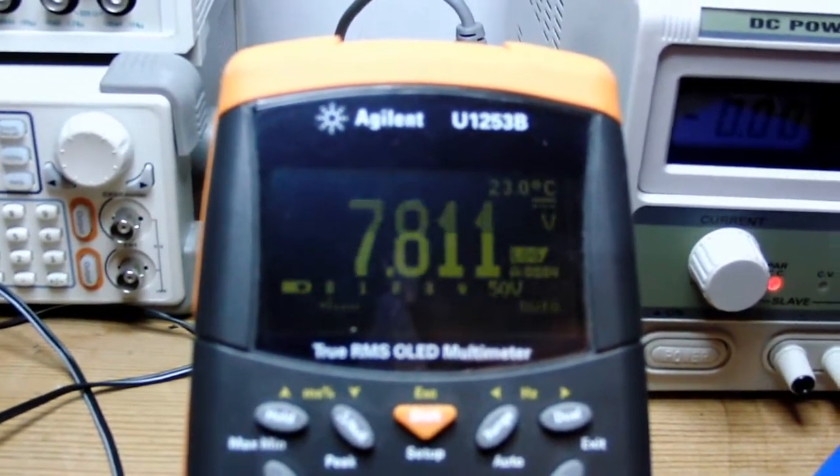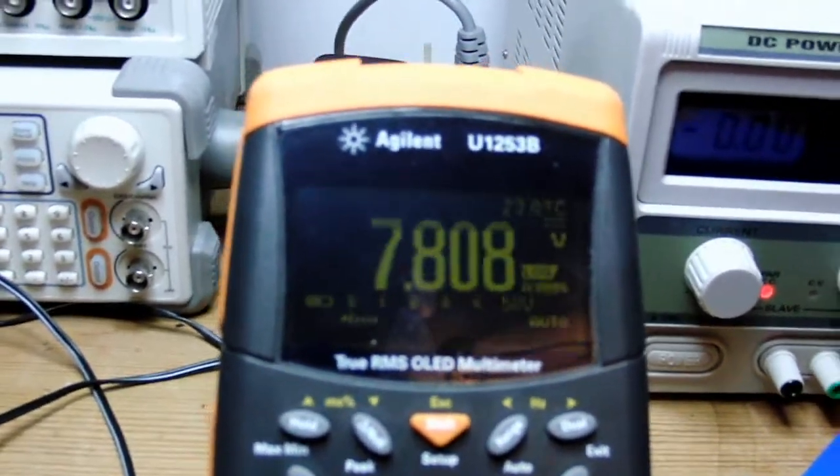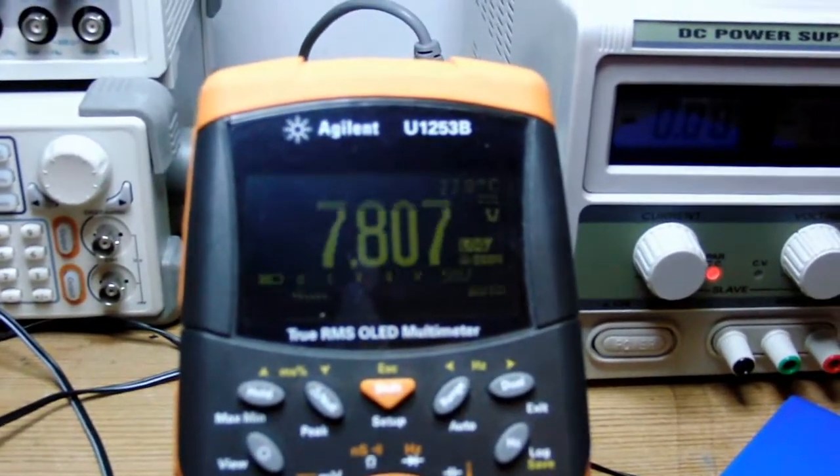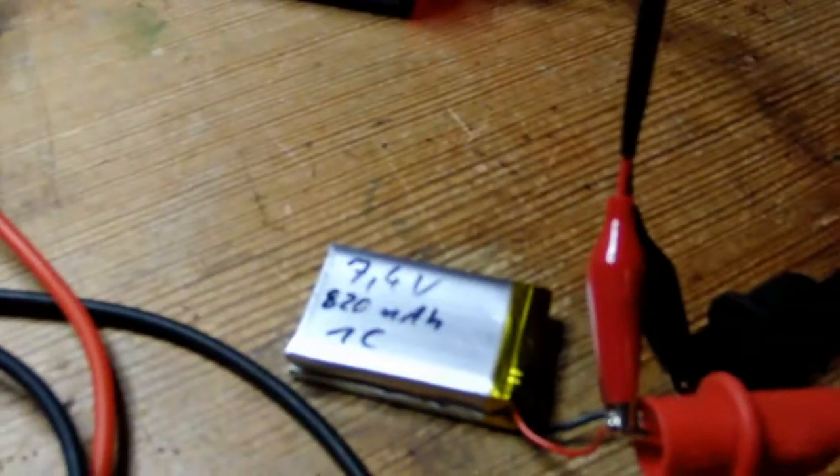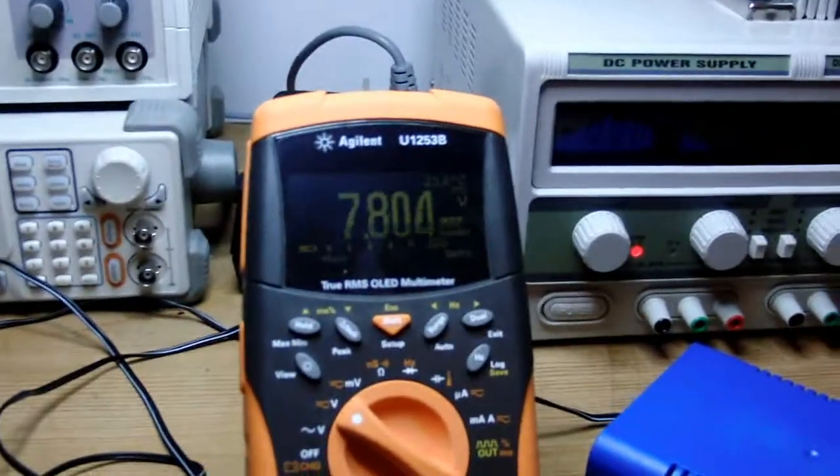With my multimeter, if the cell voltage reaches 6V I will call this one empty and I will show you the discharge graph later.